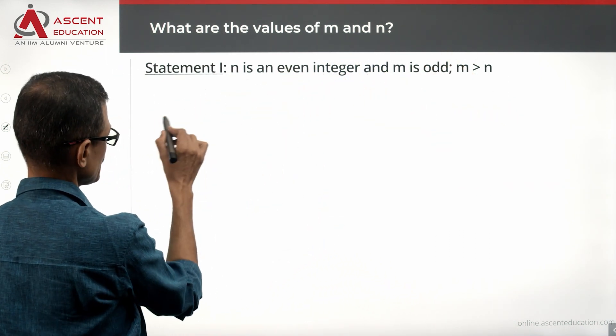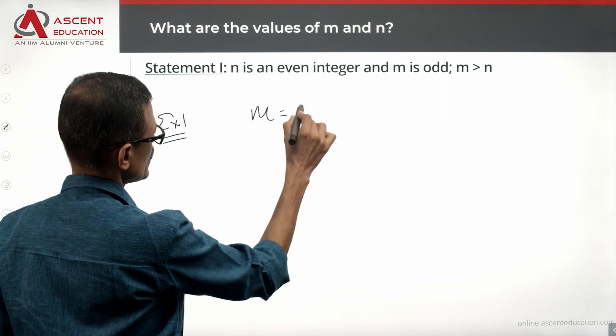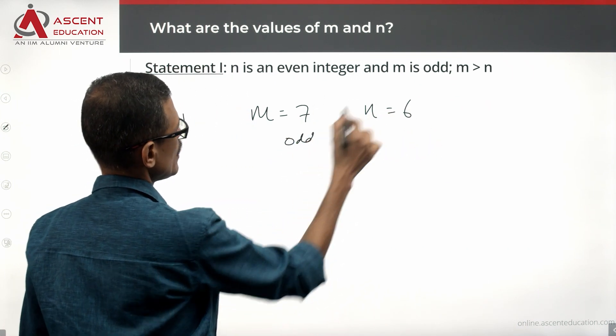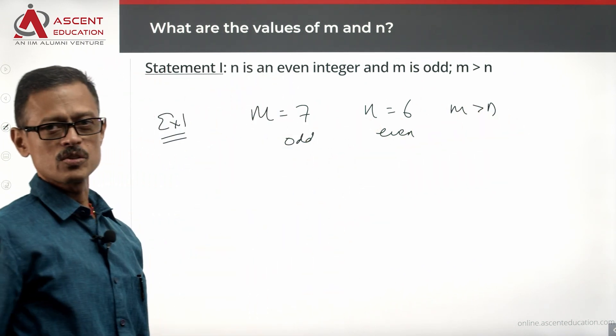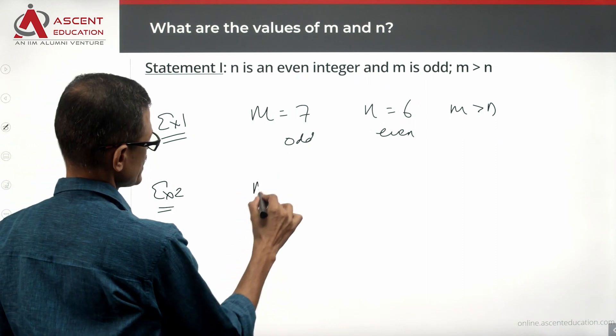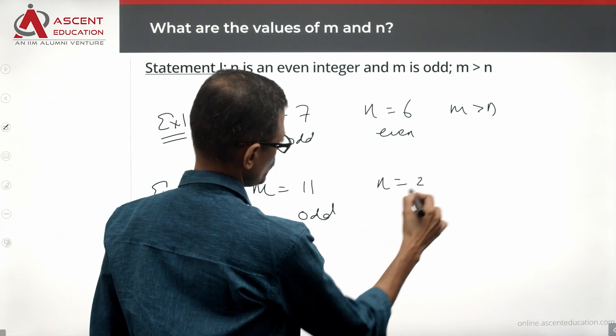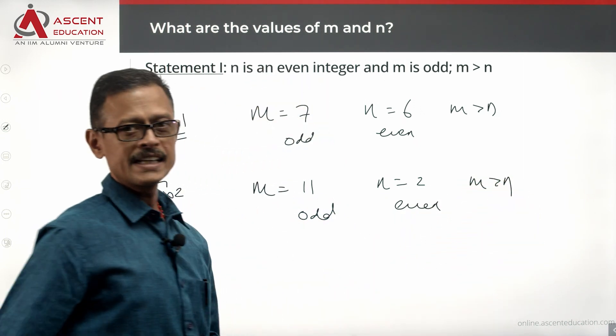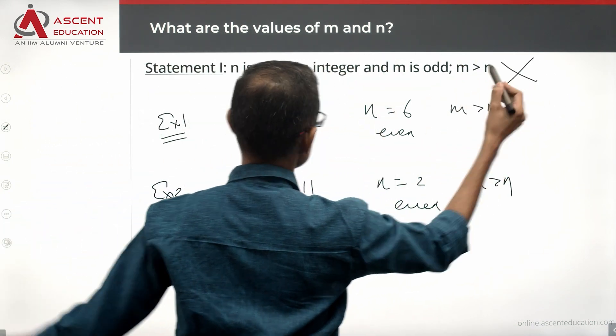Let's look at counter examples. There are infinite possibilities. M equals 7, N equals 6. This is odd, this is even, and M is greater than N. This is one possibility. You know there are millions of values. M equals 11, which is odd. N equals 2, which is even. M is greater than N. So we are not getting a unique value. Infinite possibilities exist. Statement 1 alone is not sufficient.